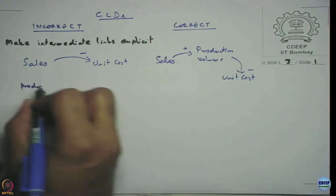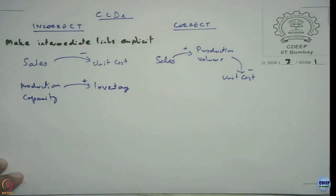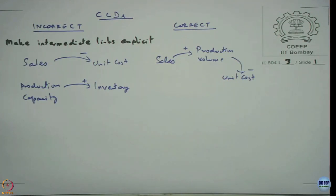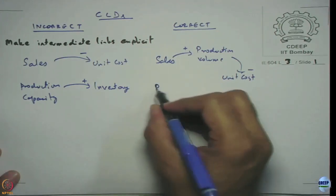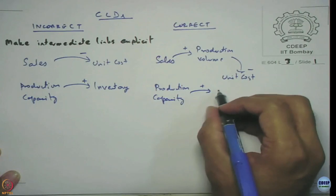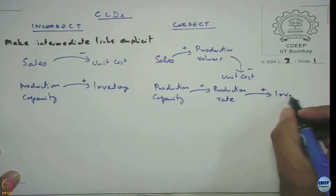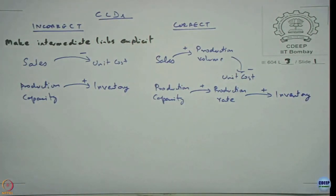For example, if we want to say production capacity can lead to increased inventory — we have large capacity so we end up having a lot of inventory. Some managers tend to say: 'We have large capacity, so we ended up making a lot of products and storing a lot of inventory.' But instead of capturing it like that, we can actually say: as production capacity increases, it tends to increase our production rate, which tends to increase our inventories. The larger capacity affords a larger production rate, which can lead to increased inventory accumulation. This is what we mean by making intermediate links explicit.